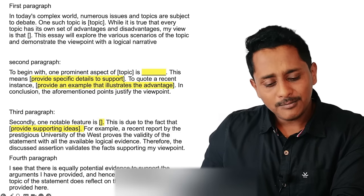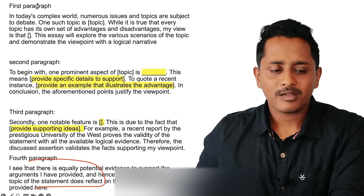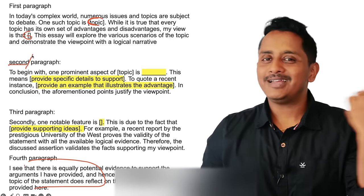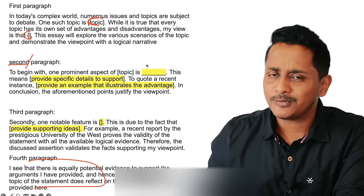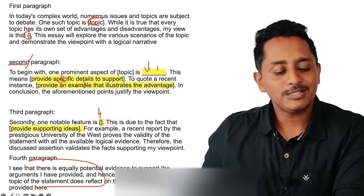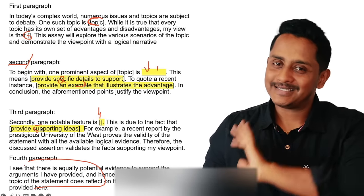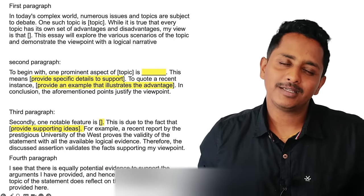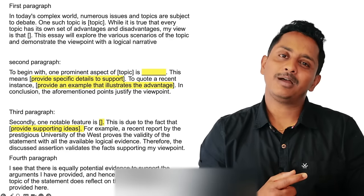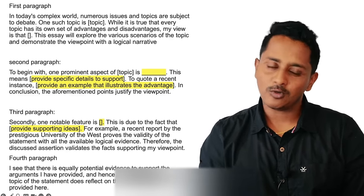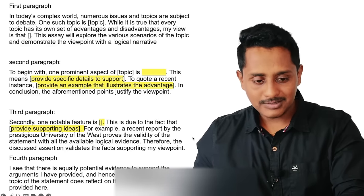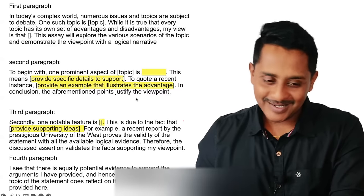This is another similar template. The last paragraph stays the same. The first paragraph: 'one such topic is' — write one word; 'my view is that' — write your view. Second paragraph: 'to begin with,' 'one prominent aspect of topic' — first sentence; 'this is because' — second; 'to quote a recent instance' — third; 'secondly, one notable feature is' — fourth; 'this is due to the fact that' — fifth. A student Gautam got 90 overall using this template, as shared in the YouTube community post.